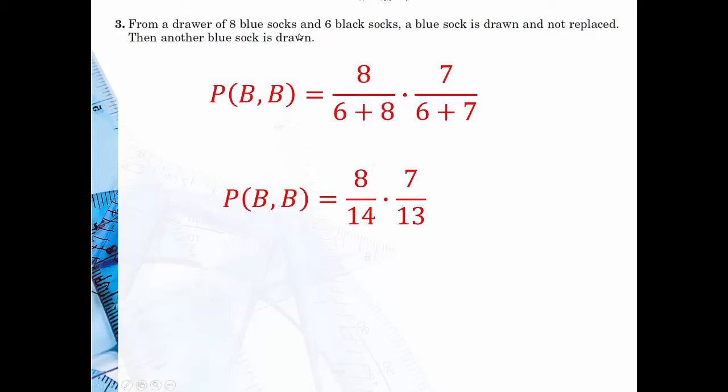Personally, I think this question is a little ambiguous because you could say what's just the probability of the blue sock being drawn given that the other sock is drawn and not replaced. So you could almost argue that the answer is also seven over 13. But for this case, we'll just look at both of them occurring, and our final answer is four over 13.